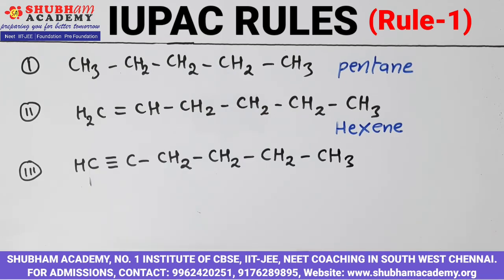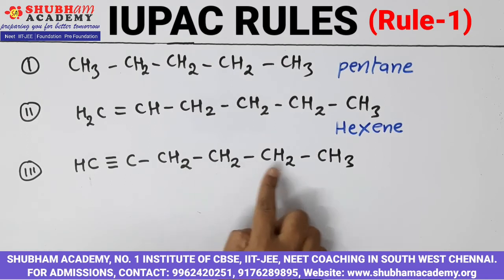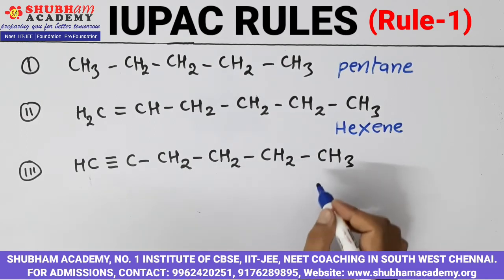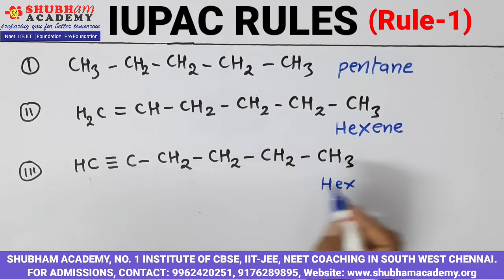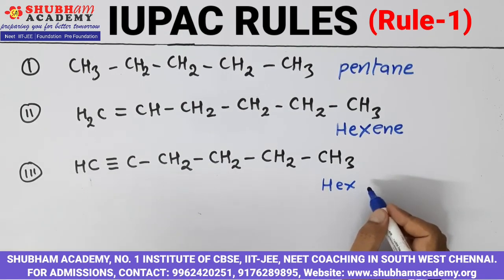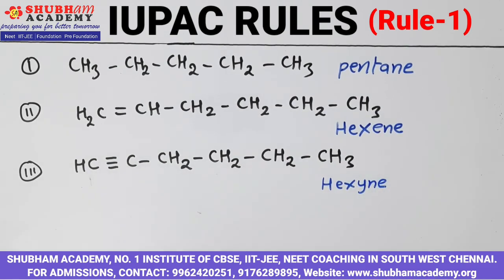One more example. Counting gives 1, 2, 3, 4, 5, 6 — again 6 carbon atoms. For 6 carbon atoms, the word root is hex. You have a triple bond here. For a triple bond, the primary suffix is yne. So the name becomes hexyne. This is the first rule — that you have to select the longest chain. This longest chain will be called the parent chain. We have seen some examples related to this rule. The remaining rules we will see in the next video.